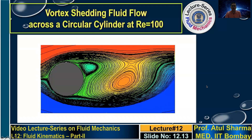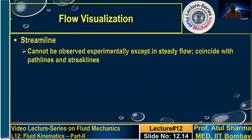Streamlines can be observed experimentally only in steady flow, because in that case they coincide with path lines and streak lines. What was shown earlier was a streamline obtained from numerical simulation. In an unsteady flow situation, streamline cannot be observed experimentally — you can observe path line and streak line experimentally. However, when flow reaches a steady state, all three lines are the same and you can observe streamline experimentally.